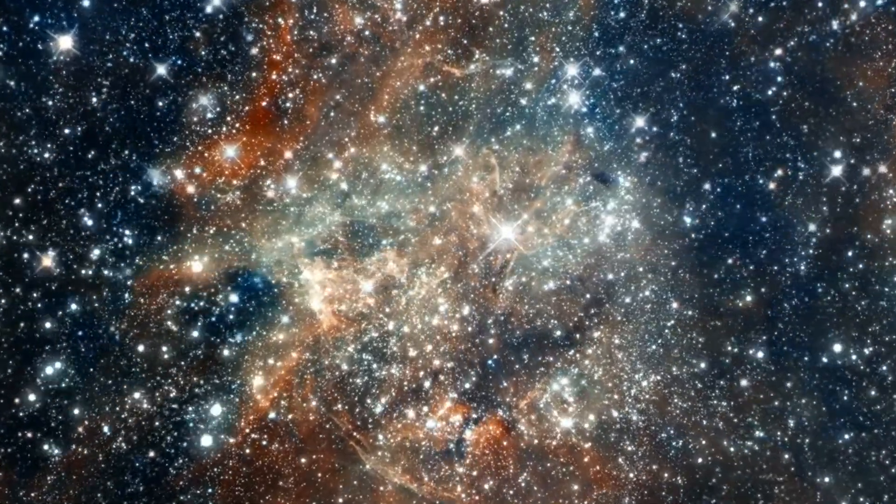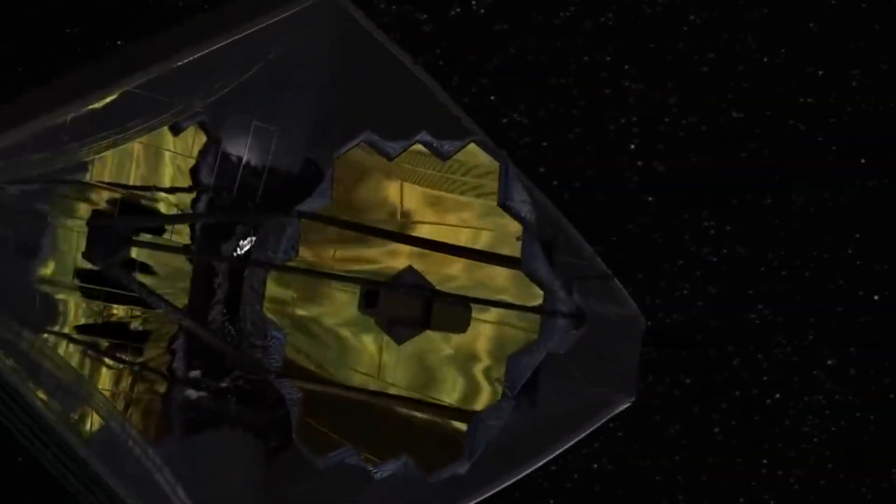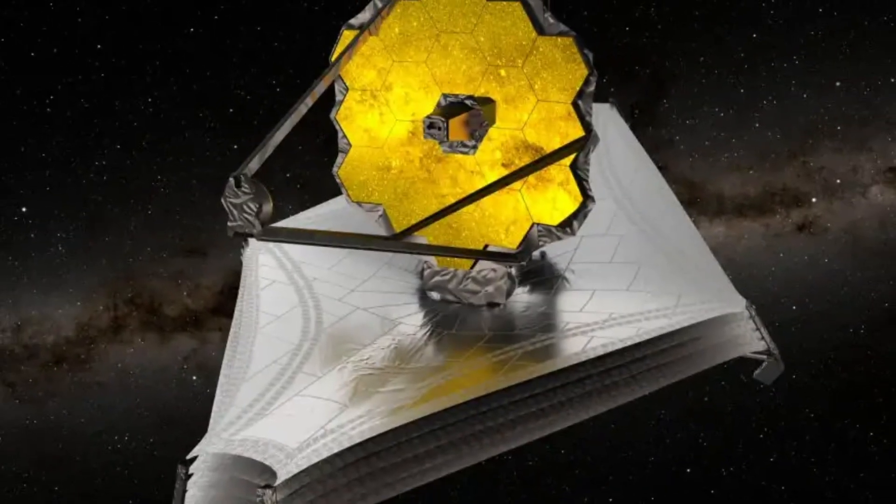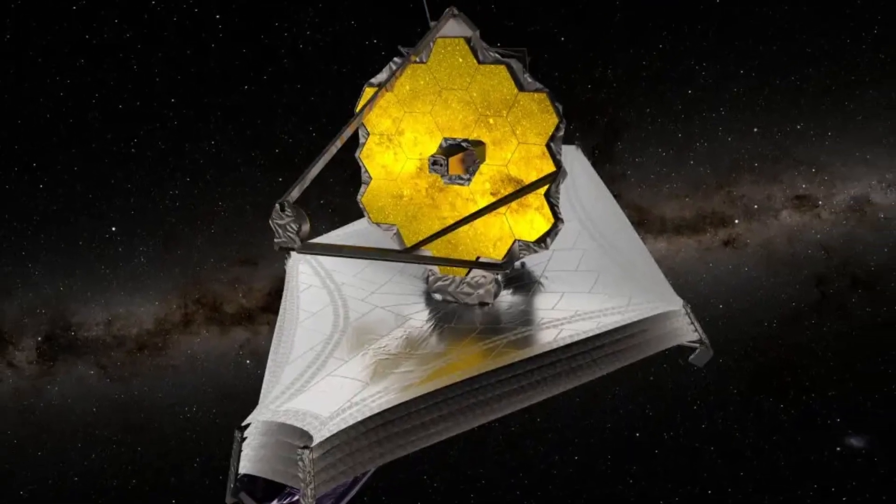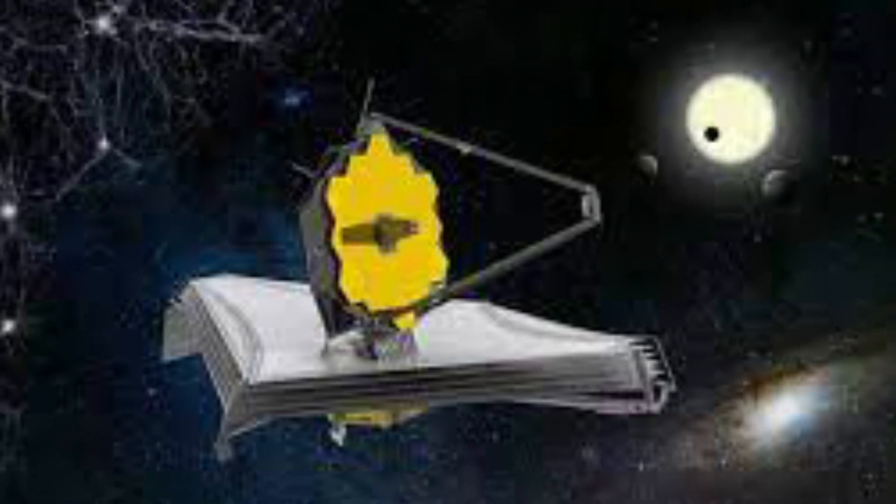It took 30 days for the James Webb Space Telescope to travel almost a million miles to its permanent home, which is a Lagrange point. It is basically a gravitationally stable location in space. The telescope arrived at L2, the second Sun-Earth Lagrange point on January 24.